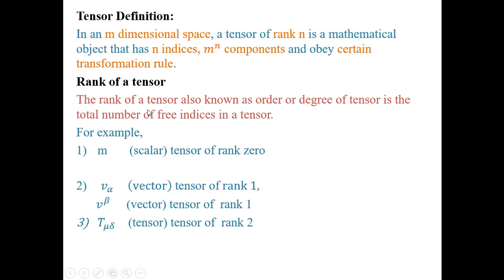The rank of a tensor, also known as the order or degree of a tensor, is the total number of free indices in a tensor. Free indices are what? This is also in the next lecture. We will just see that if a tensor here is a number m, it has no index, so this is a tensor of rank 0. V-alpha has one index, this is a tensor of rank 1. This is also a tensor of rank 1. And this T-mu-beta is a tensor of rank 2. When you count free indices, if it occurs an odd number, you will find the free index. So that is a tensor of rank 2.